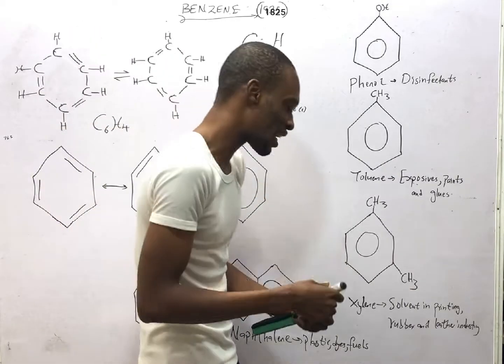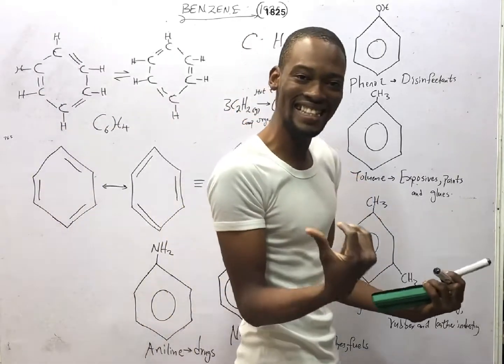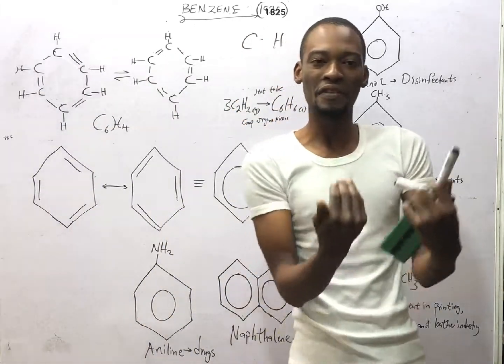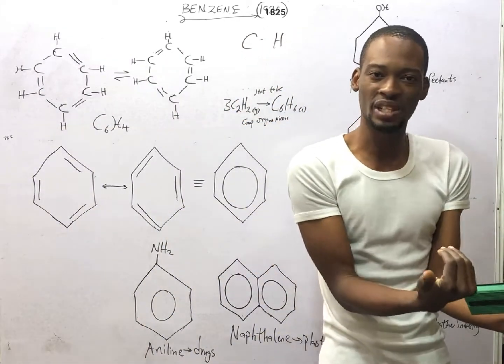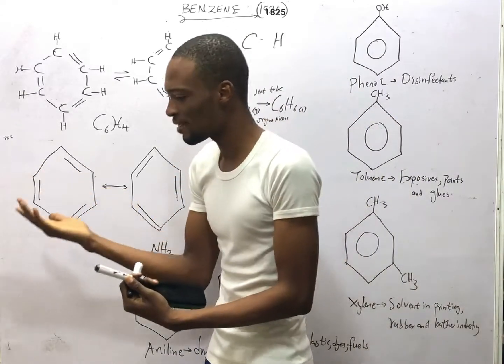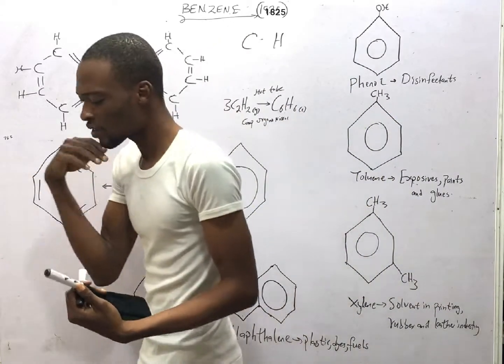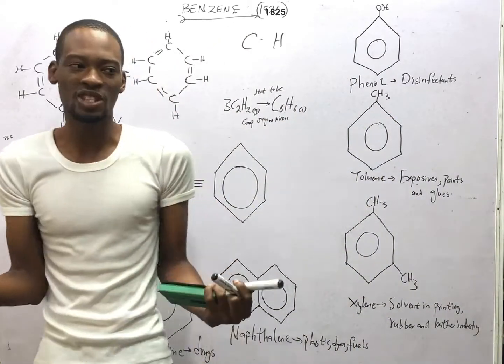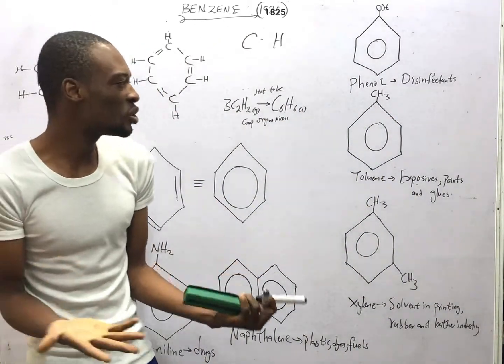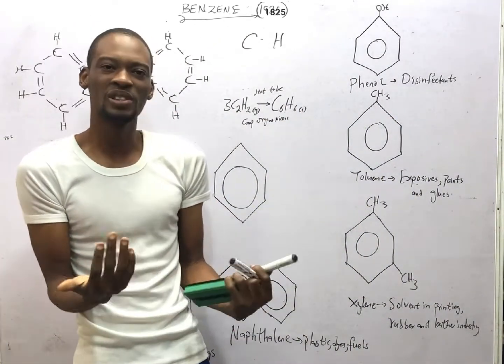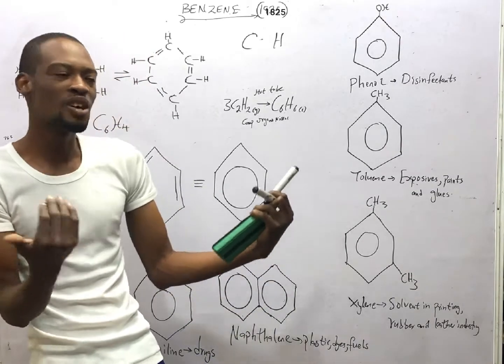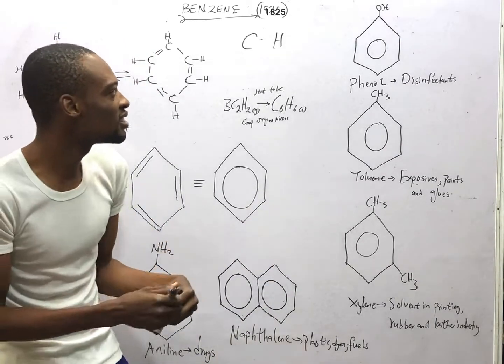Dealing with hydrocarbons, I said that we have aliphatic hydrocarbons and aromatic hydrocarbons. Aliphatic hydrocarbons are those that contain straight chains or branched chains.